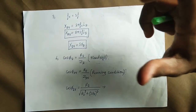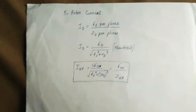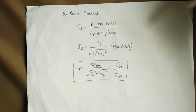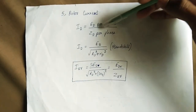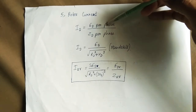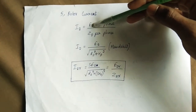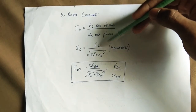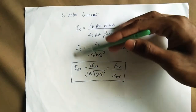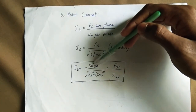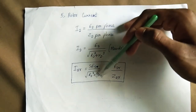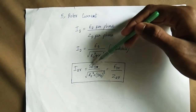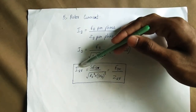Looking at the rotor current: the induced EMF E2 per phase divided by the impedance Z2 per phase gives the rotor current. At standstill, this is E2 divided by Z2. At running condition, E2R equals S×E2 and X2R equals S×X2, so the running rotor current equals S×E2 divided by Z2R.